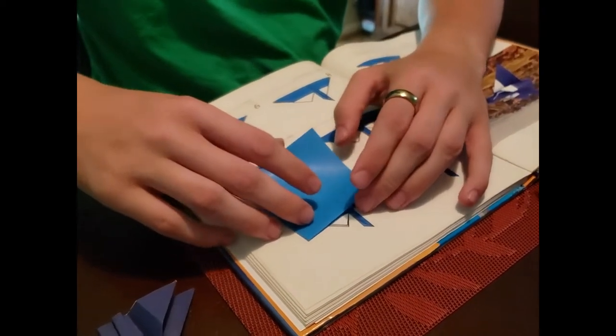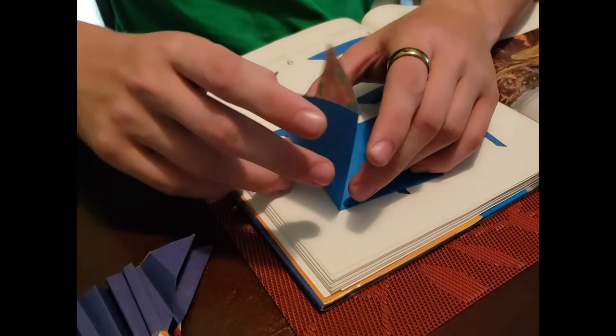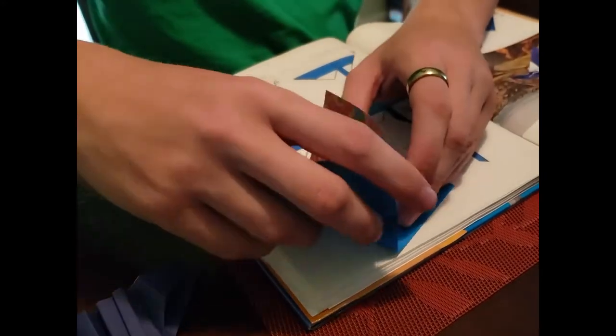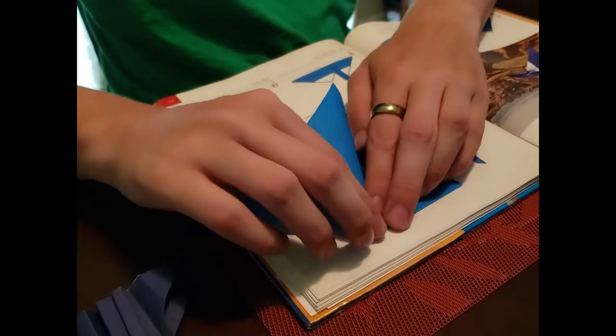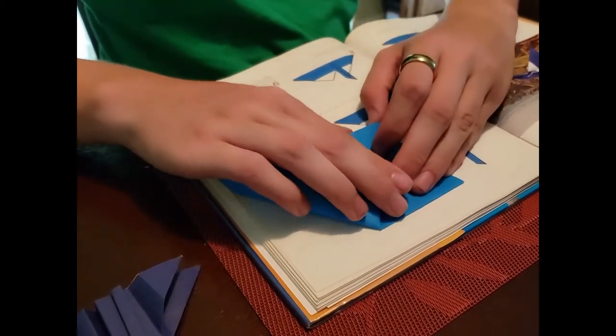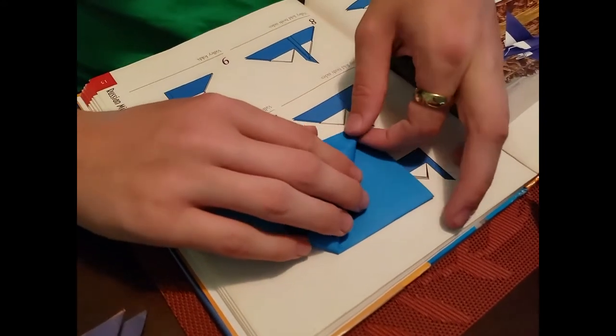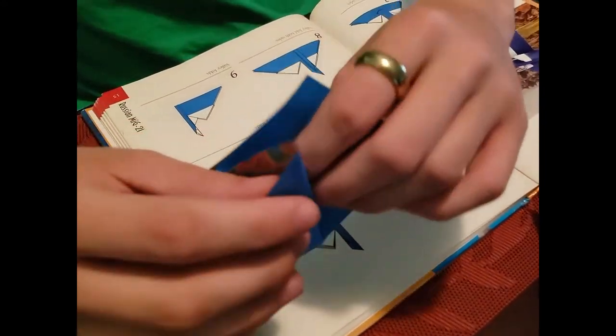Now this is where the fold gets tricky. You're going to take it and open it up like so. And you're going to want to press it to make a triangle out of the paper. This can get kind of tricky because as you can see I'm having problems here.